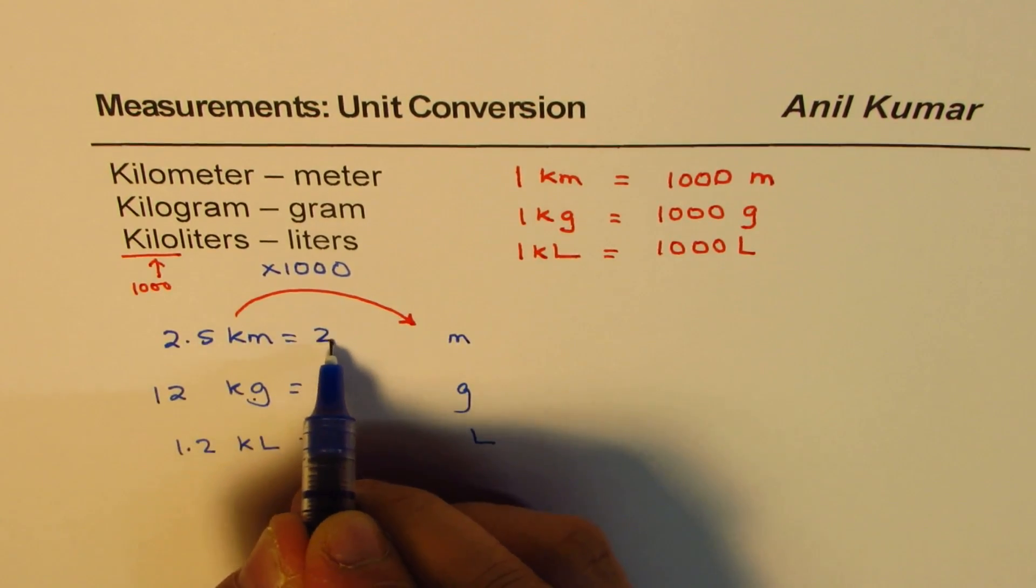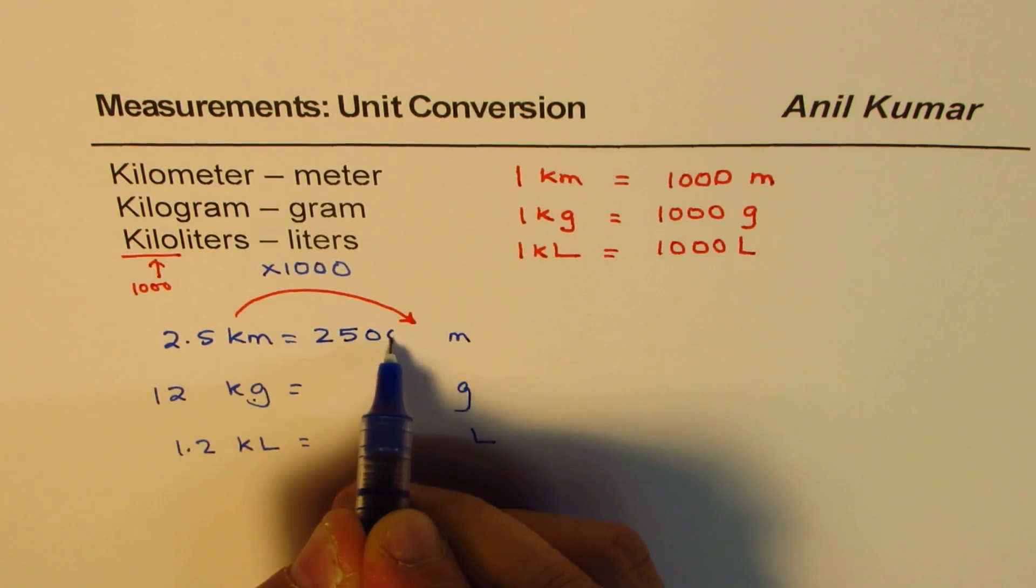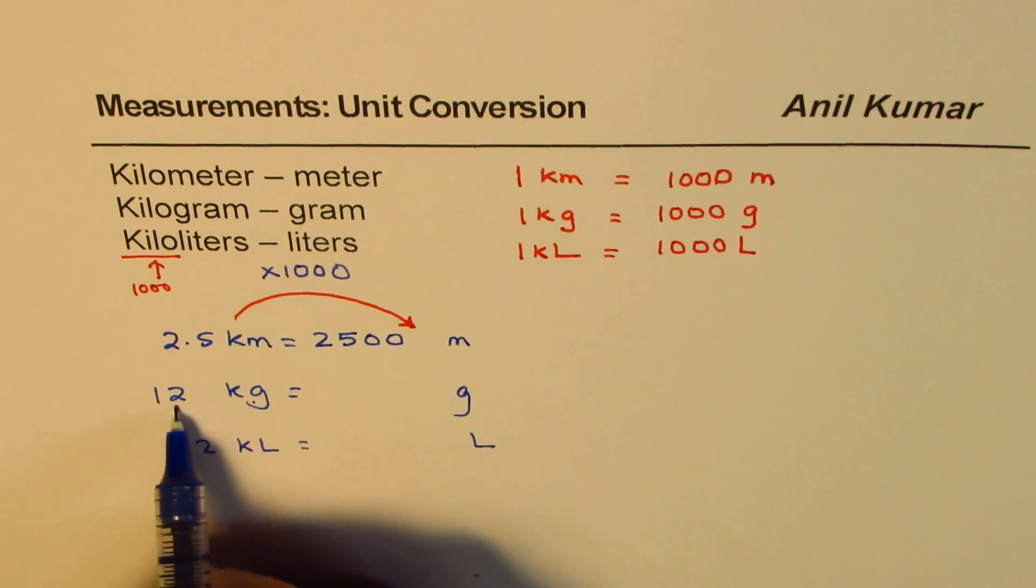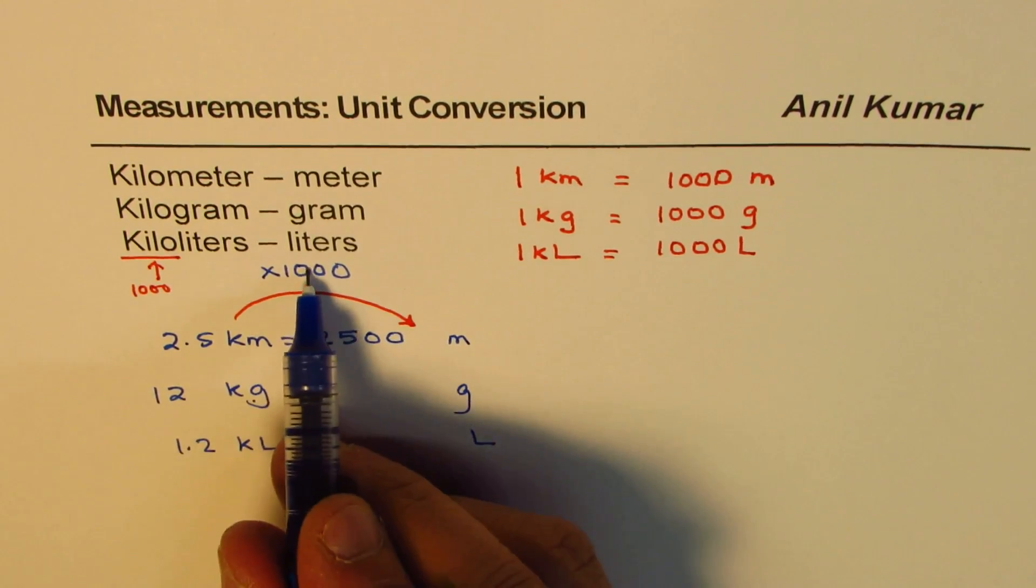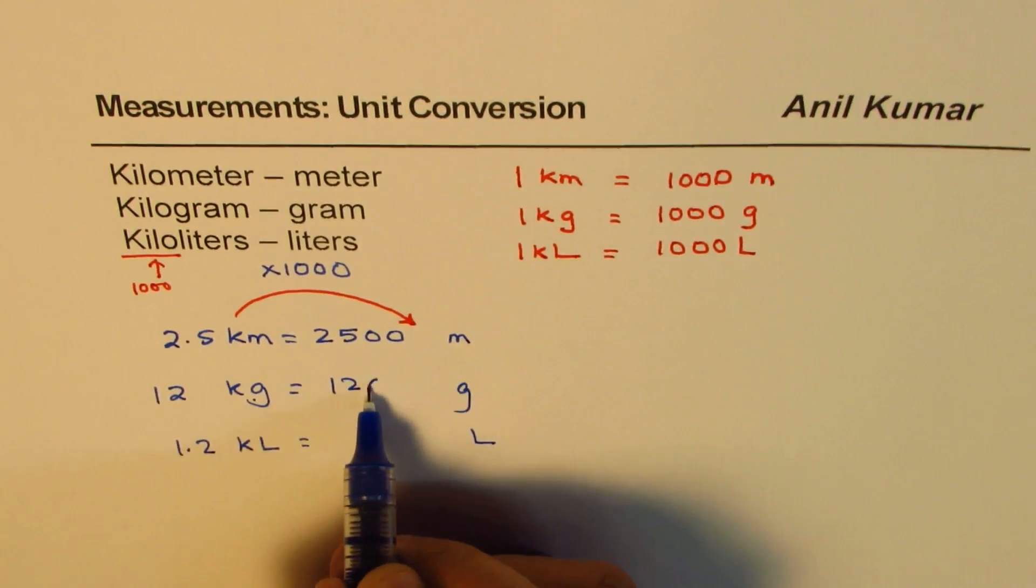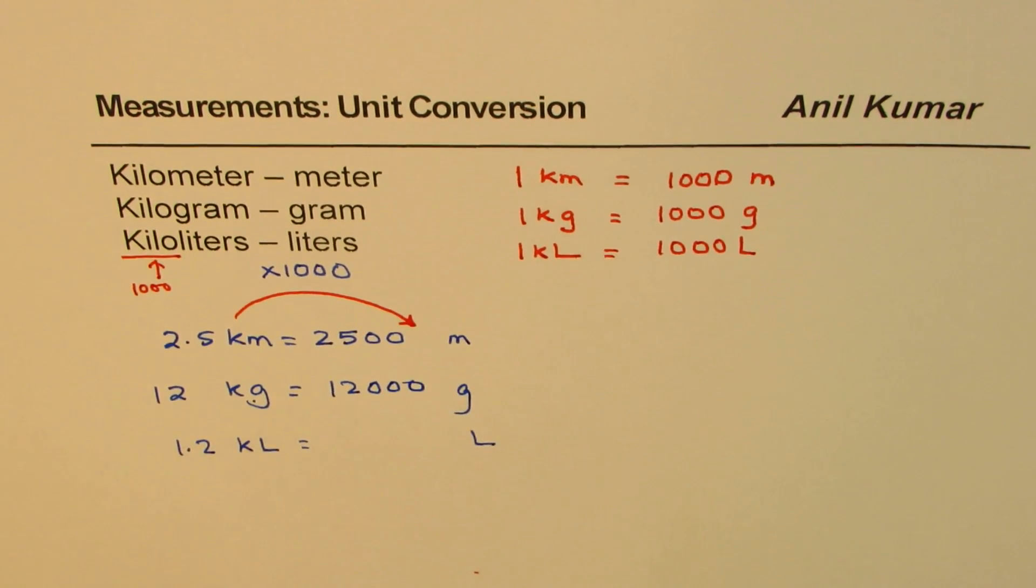2,500. That number is thousand, right? 2,500. Do you see that? 12 kilograms to grams, 12,000. So we could get 12,000. Do you see that? 12,000.